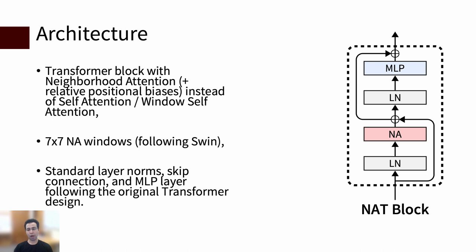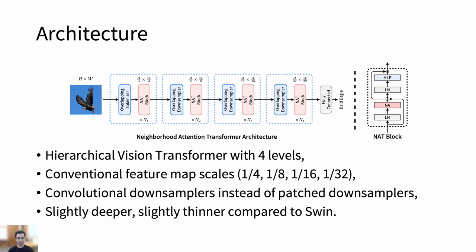Now let's move on to experiments, starting off with architecture. NA blocks are transformer encoder layers, but with neighborhood attention instead of self-attention, so we're alert to SWIN in this regard. We also used 7x7 windows. The overall architecture is a hierarchical vision transformer with four levels. Producing feature maps with the conventional scales, again, similar to SWIN.